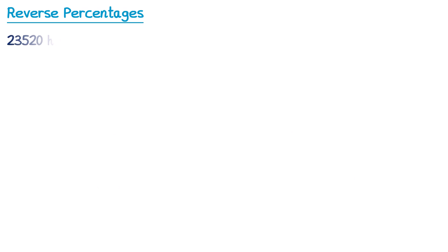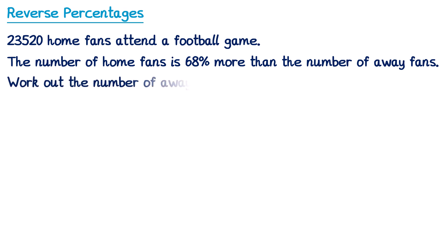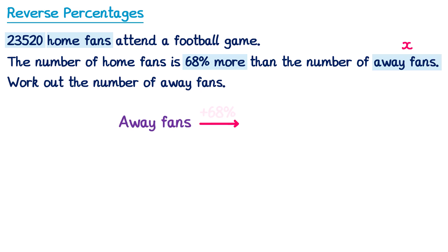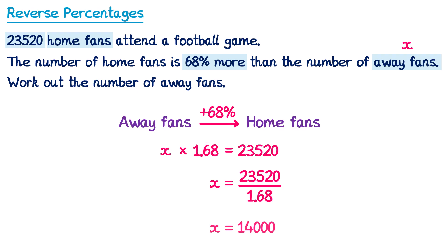Let's have a look at another question. 23,520 home fans attended a football game. The number of home fans is 68% more than the number of away fans. We're asked to work out the number of away fans. We call the away fans x. We know that x increased by 68% gives the home fans, so x multiplied by 1.68 equals 23,520. Dividing both sides by 1.68 gives x equals 23,520 divided by 1.68, which is 14,000.